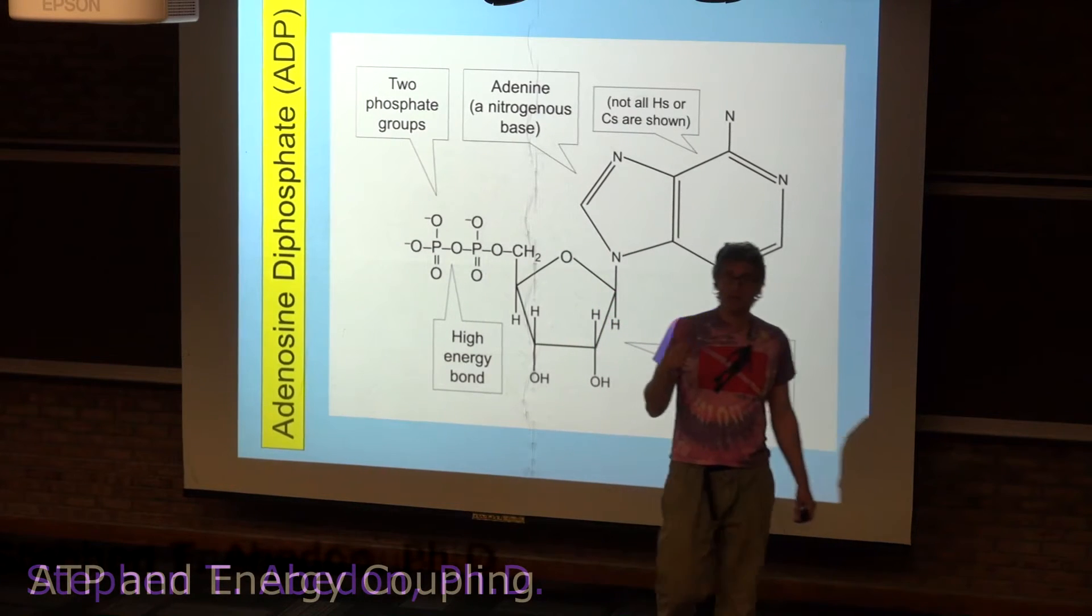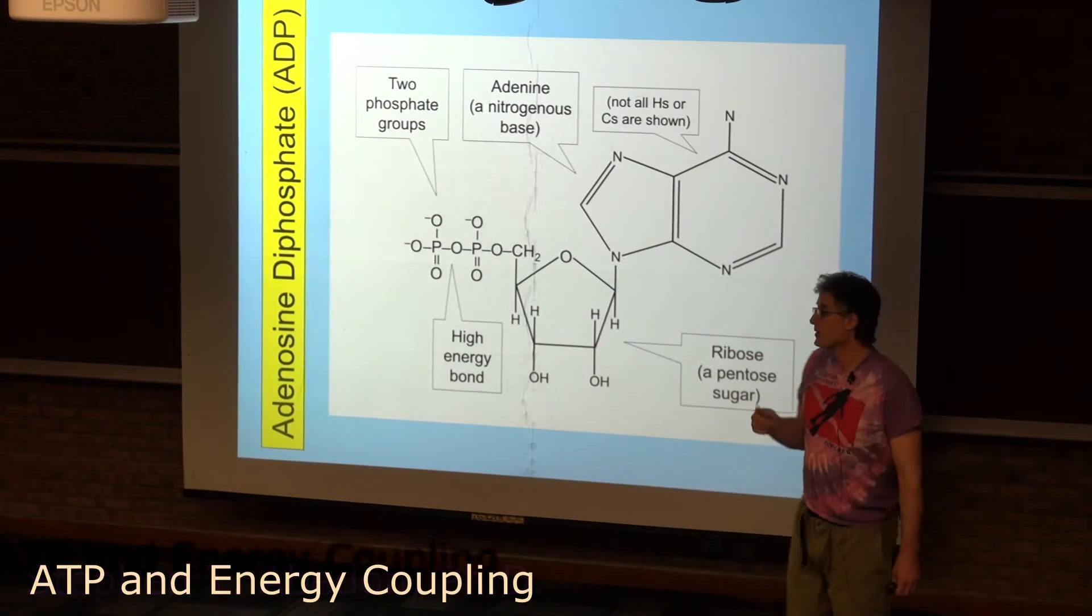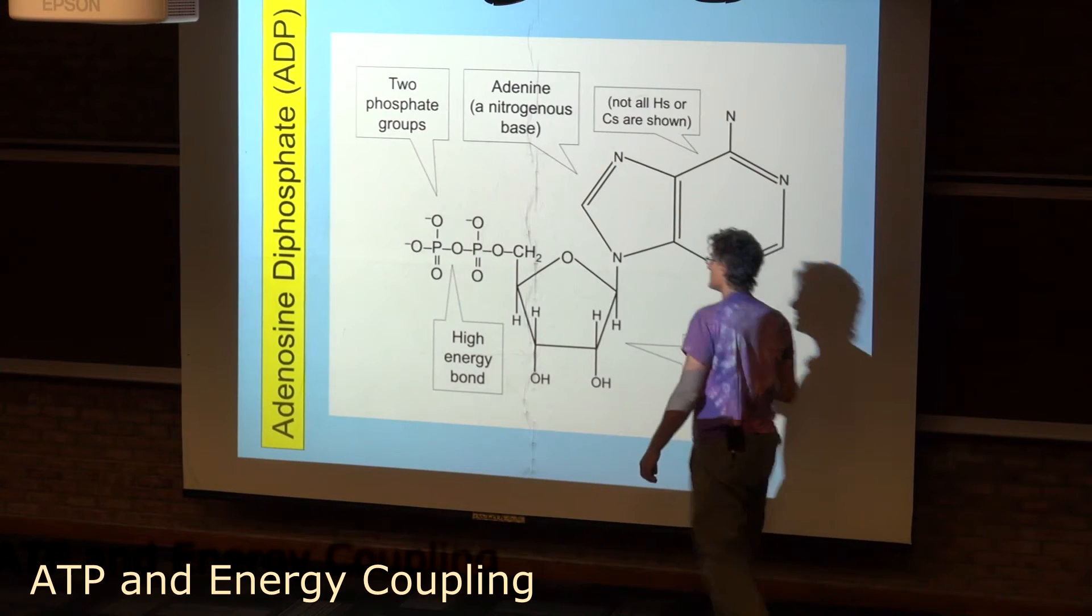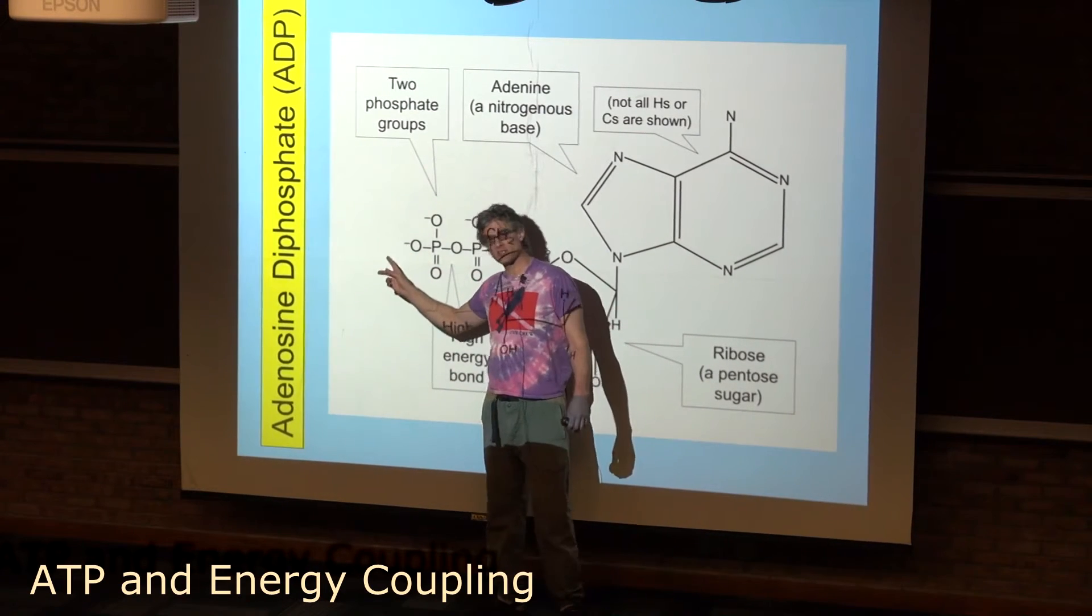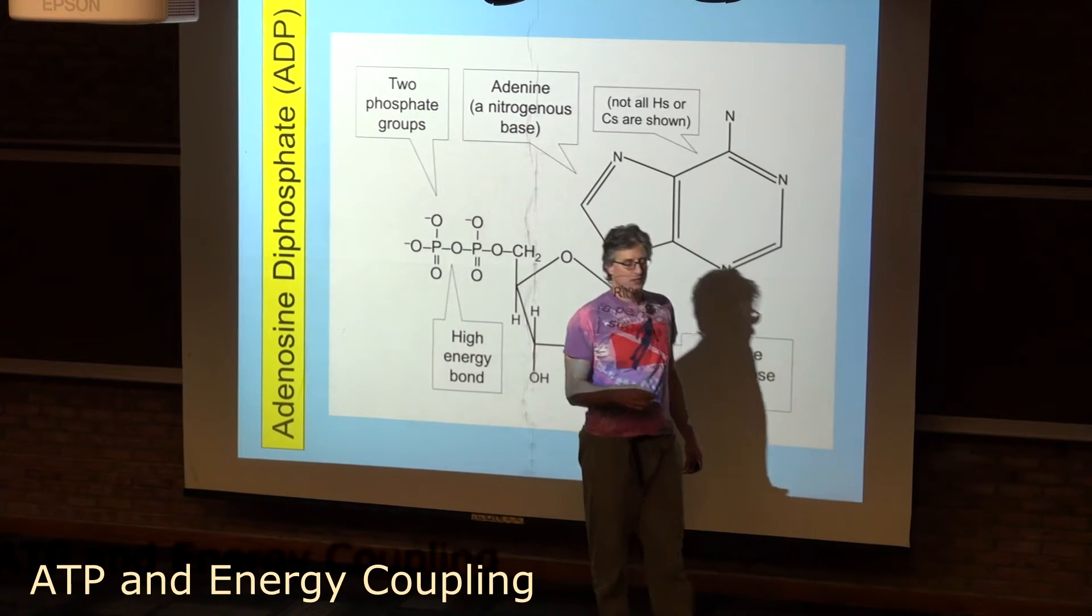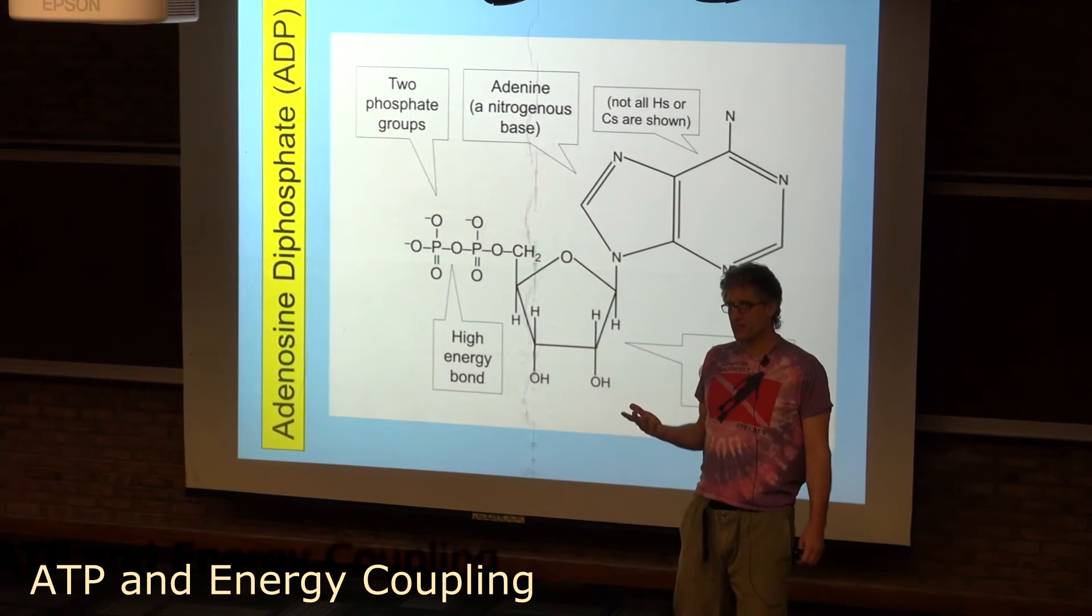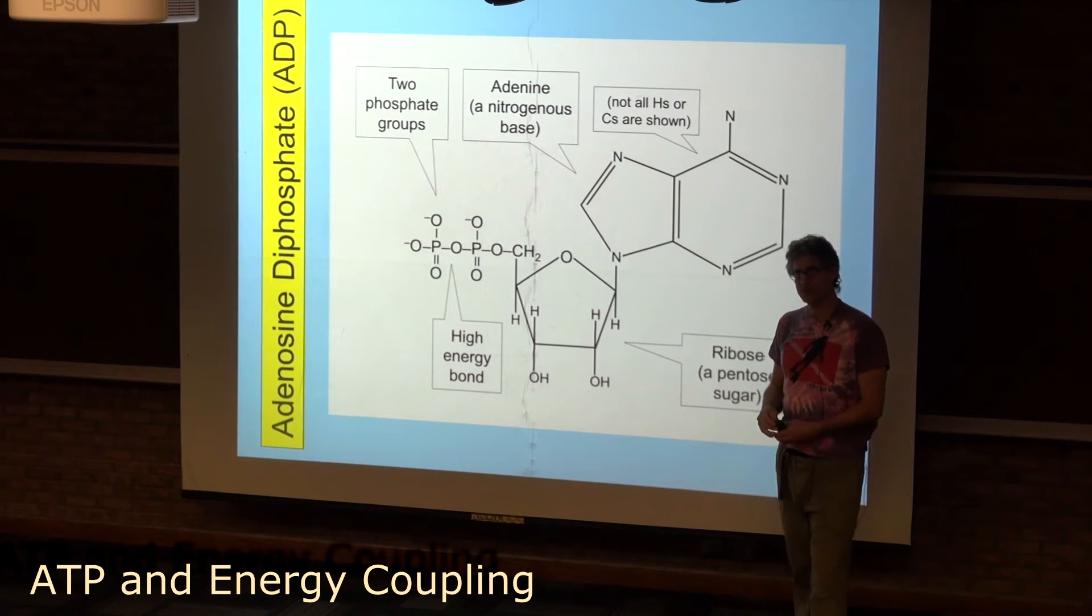So when you're going back and forth between ATP and ADP, what's happening is simply a phosphate is being put on and taken off. Anabolism takes a phosphate off, catabolism puts a phosphate on.